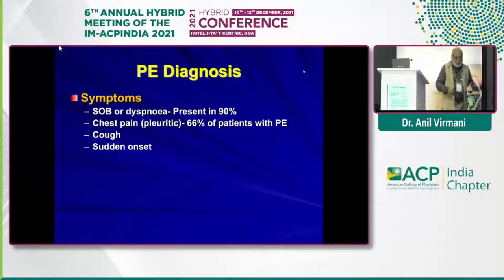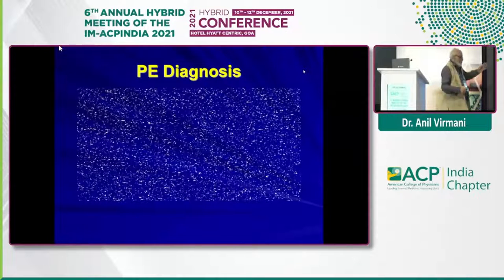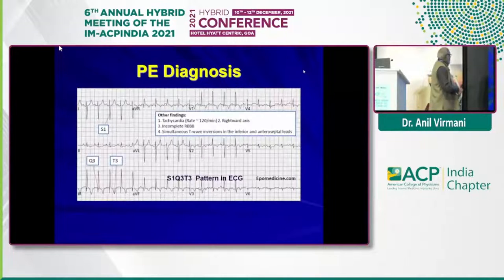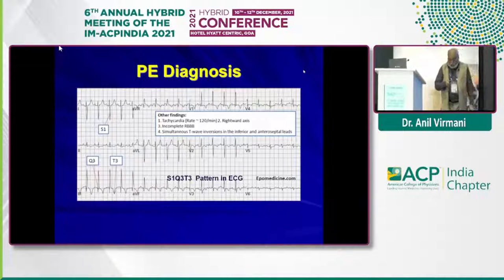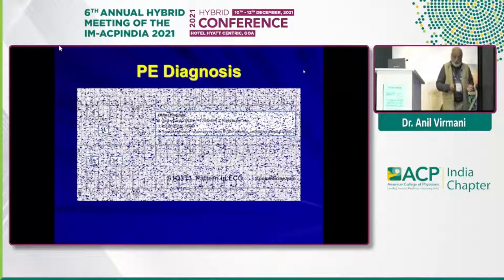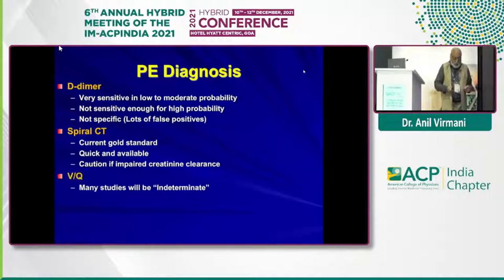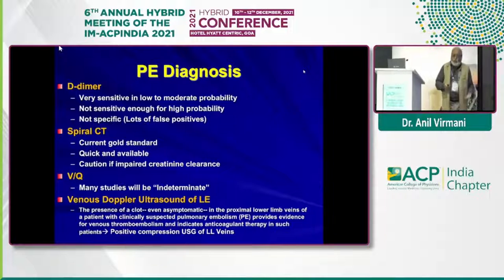For diagnosis: breathlessness is present in 90% of cases, pleuritic chest pain in 66%, and it is of sudden onset. Signs include tachycardia, tachypnea, hypoxia, and lower extremity swelling. The classical ECG shows tachycardia, incomplete RBBB, and T-wave inversions. What is very classical is a deep S in lead I, a narrow Q-wave in lead III, and inverted T in lead III — known as the S1Q3T3 pattern. D-dimer is very sensitive for low to moderate probability, not sensitive for high probability, and not specific. Spiral CT is the current gold standard — quick and available. Ventilation-perfusion scan can be indeterminate. Venous Doppler ultrasound is very important; even in asymptomatic patients, compression ultrasonography can identify clot.